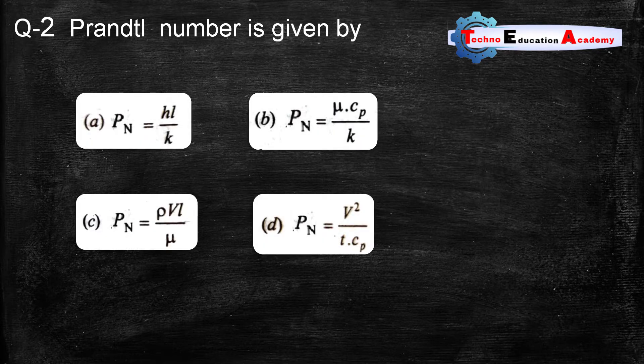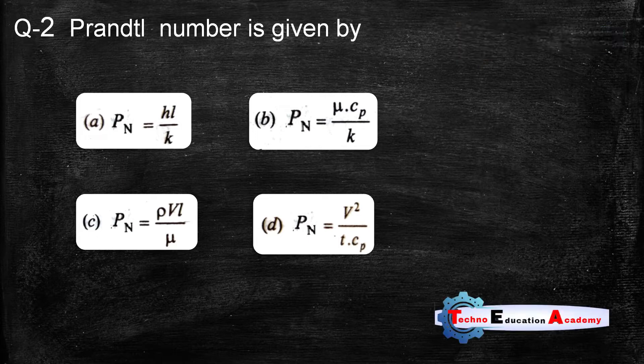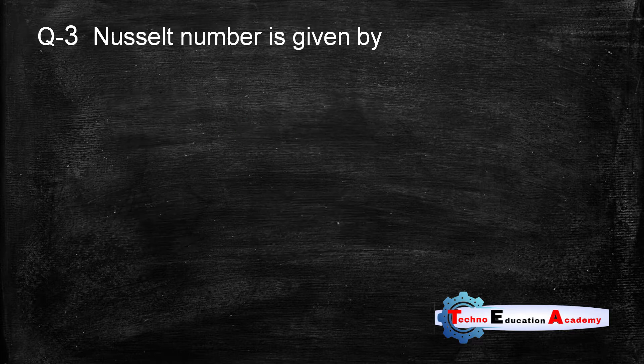Question number two: Prandtl number is given by. We know that Prandtl number equals μCp/k, where μ is the coefficient of viscosity, Cp is the specific heat at constant pressure, and k is the thermal conductivity. So the right answer is option B.